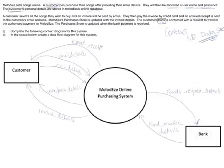This is part two of the Melody's online purchasing system. So now, instead of looking at drawing the context, which is what we've done here, and you can see we did that in part one, we are now going to create a data flow diagram for the system.